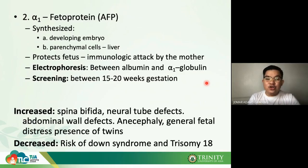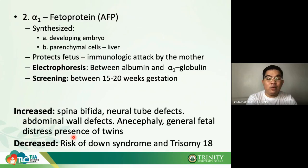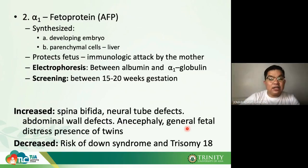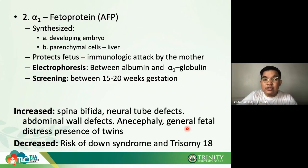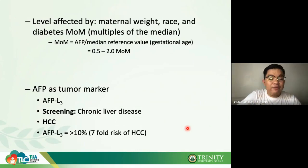Increased AFP is seen in spina bifida, neural tube defects, abdominal wall defects, anencephaly, general fetal distress syndrome, and twin pregnancies. Decreased AFP is seen in trisomy 18 and Down syndrome.